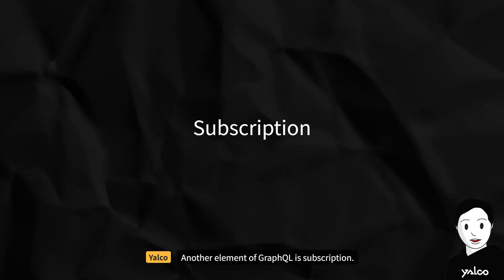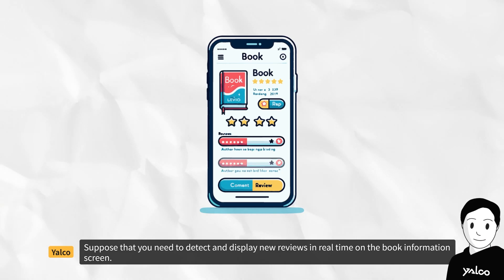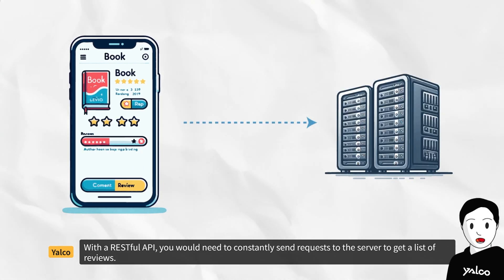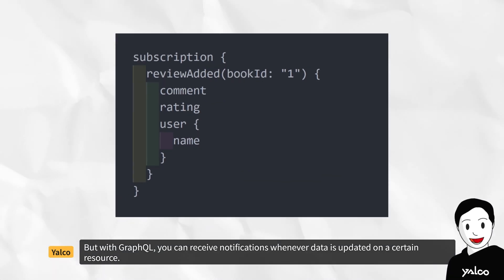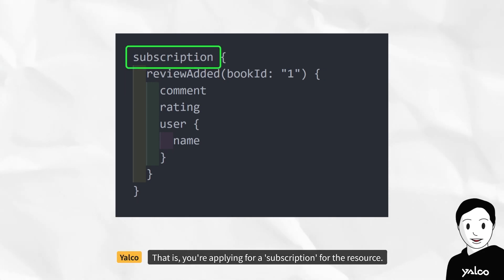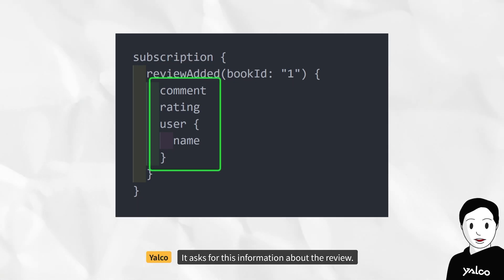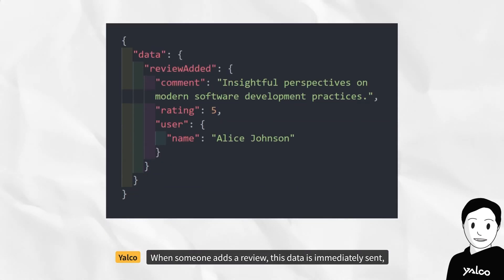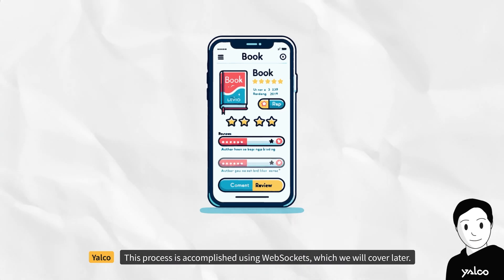Another element of GraphQL is subscription. Suppose you need to detect and display new reviews in real-time on a book information screen. With a RESTful API, you would need to constantly poll the server to get a list of reviews. But with GraphQL, you can receive notifications whenever data is updated on a certain resource — that is, you subscribe to the resource. When a review about a book with index number 1 is added, the data is immediately sent and the front end displays the updated screen. This is accomplished using WebSockets, which will be covered later.